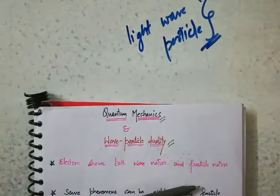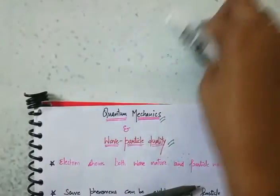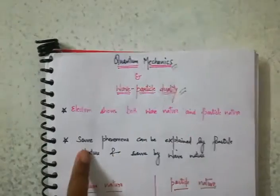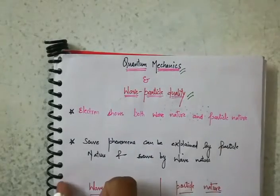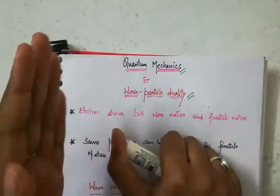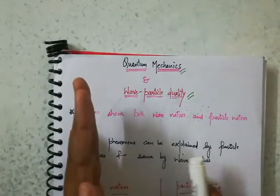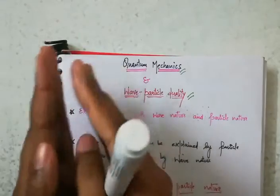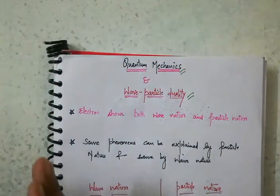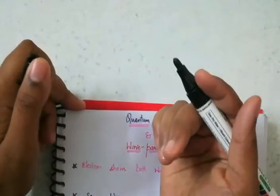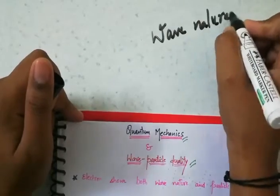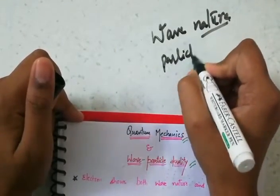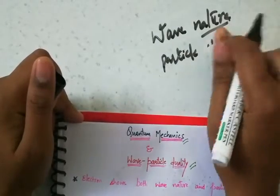From that theory we got to know that the electron — the very basic particle of solids — shows both wave and particle nature. Some phenomena in EDC I will explain using wave nature, and some using particle nature. But before going to that theory, we need to understand what wave nature and particle nature the electron is showing.